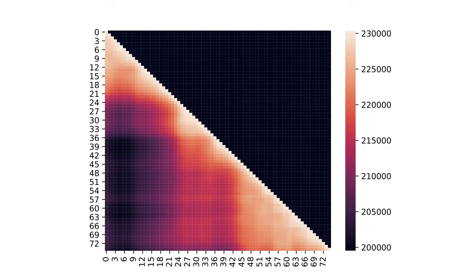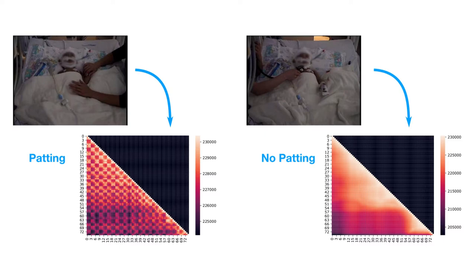We didn't use directly the video data but instead computed a frame-to-frame correlation matrix for each frame of the segment. The idea is that patting is a repeated motion that could show some periodicity in the cross-correlation matrix. We then input this cross-correlation matrix to a neural network.